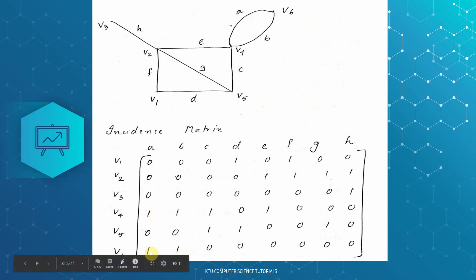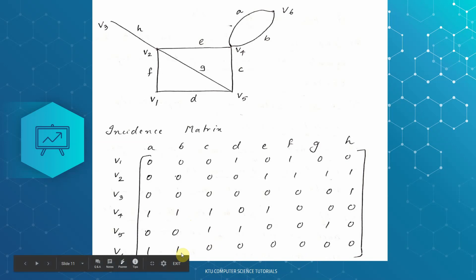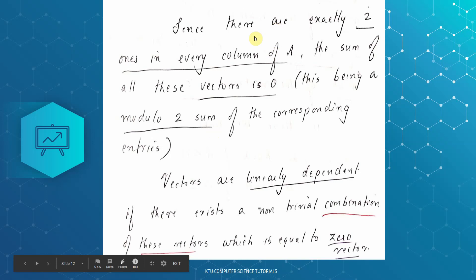1 plus 1 equals 2. 2 mod 2 equals 0. We take the remainder: 2 into 1 equals 2, so quotient equals 1 and remainder equals 0. Since there are exactly 2 ones in every column, the sum of all these vectors is 0.